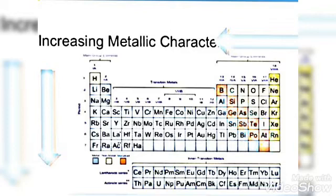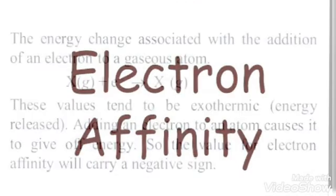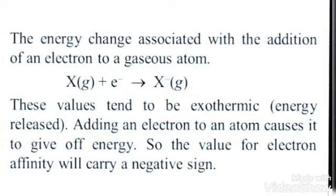So electrons can be released easily. In a period from left to right, metallic character decreases because atomic size decreases. Due to decreased atomic size, effective nuclear charge is more, so it becomes difficult for the atom to lose its electrons from the valence shell. Therefore, in the modern periodic table, on the left hand side we have pure metals and on the right hand side we have pure non-metals.